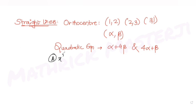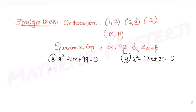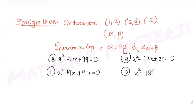The answer choices are: x² - 20x + 99 = 0, x² - 22x + 120 = 0, x² - 19x + 90 = 0, and x² - 18x + 80 = 0. We need to figure out which one is the correct answer.